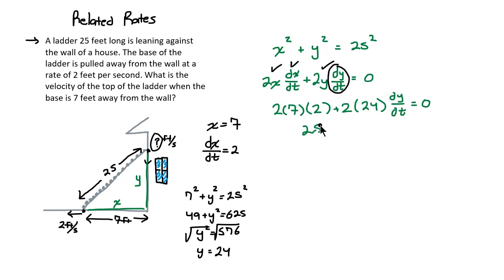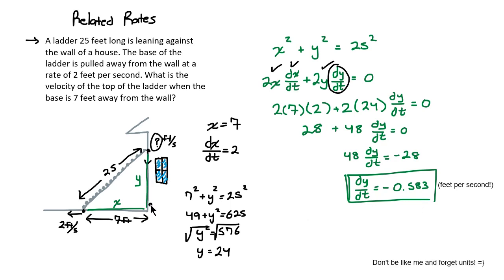I'm getting 28 plus 48 dy dt equals 0. I'm subtracting 28 from both sides. We've got negative 28 on the right here. We're going to divide both sides by 48. We get the negative quantity, negative 0.583. Why negative? Because the ladder is falling down. And this dimension is closing.